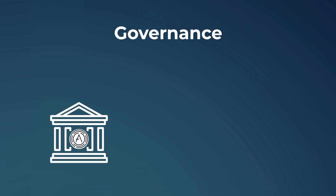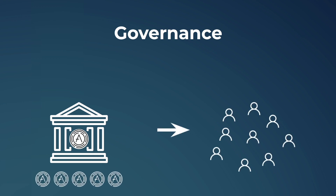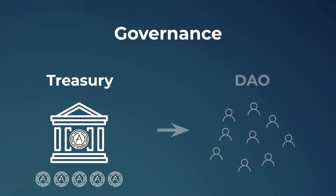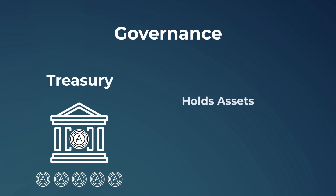While the logistics of governance and implementing changes may vary depending on the project, the general practice is one where the project mints and sells an initial supply of these governance tokens, and the individuals or groups who choose to purchase these tokens form a decentralized autonomous organization — or in layman's terms, the governing body for the project. The funds generated from the initial tokens form the treasury.